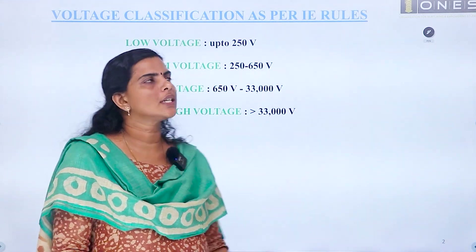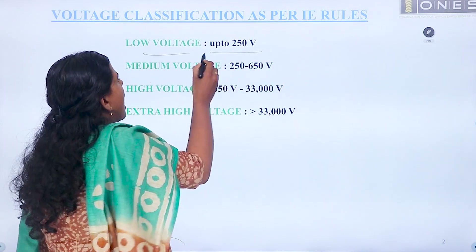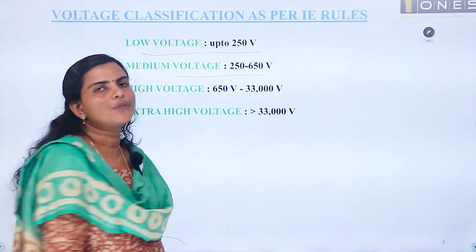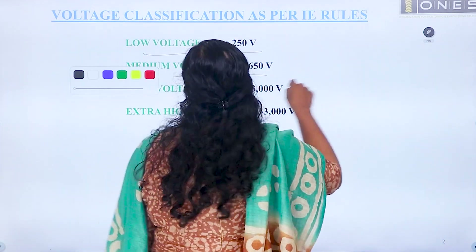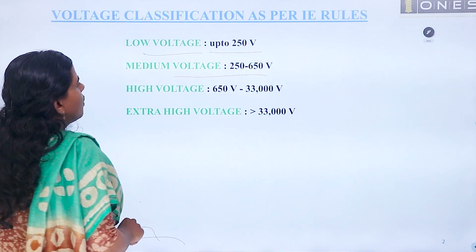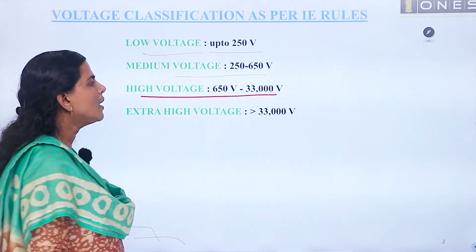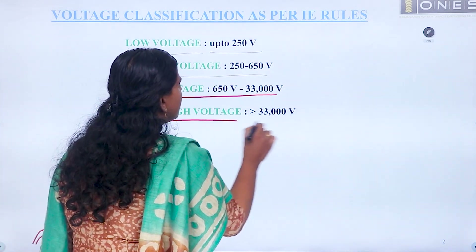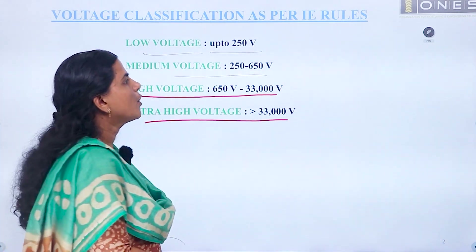Low voltage is 0 to 250 volts and medium voltage is 250 to 650 volts. High voltage is 650 volts to 33 kV, and greater than 33 kV is classified as extra high voltage.